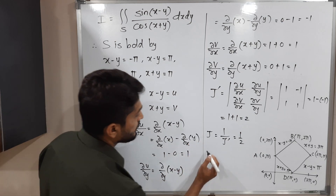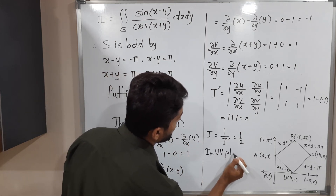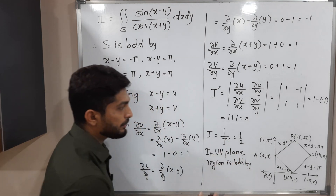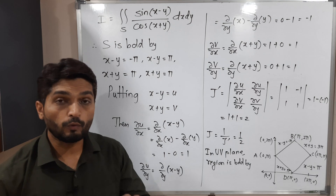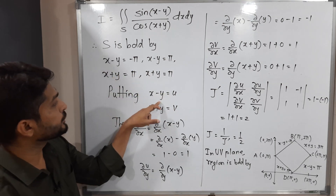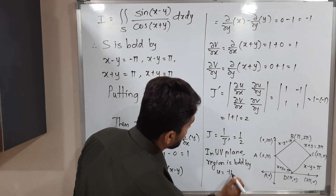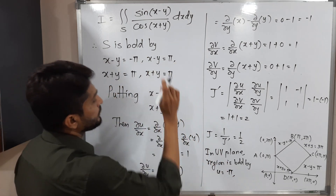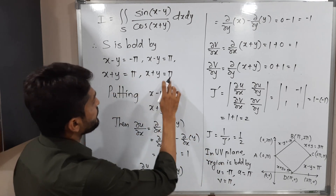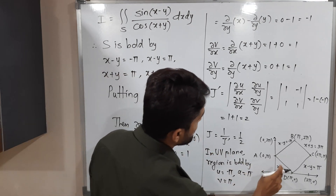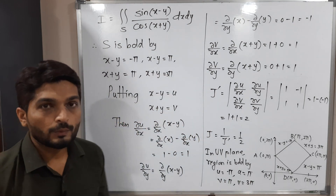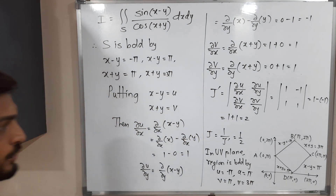Now we find the limits in the uv-plane. The region is bounded by: u equals minus pi, u equals pi, v equals pi, and v equals 3pi. So in the uv-plane the limits are u from minus pi to pi and v from pi to 3pi.